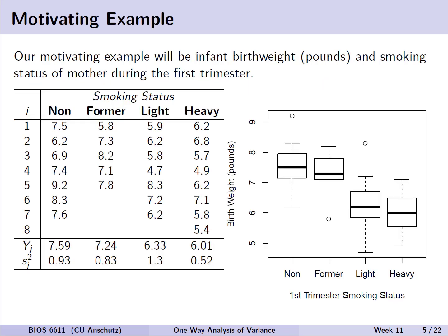The motivating example we will use is infant birth weight in pounds and smoking status of the mother during the first trimester. We have j equal to 4 groups: non-smoking, former smoker, light smoker, and heavy smoker, where non is a never-smoking group. We see the average birth weight and variance for each group, where non-smoking and former smoking birth weights are both around 7 to 7.5 pounds, light smoking decreases to 6.33, and heavy smokers have the lowest birth weight. We can also visualize this with box plots, which show that generally decreasing trend in the median.